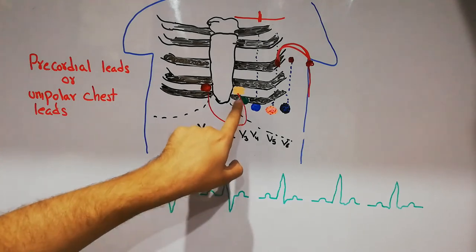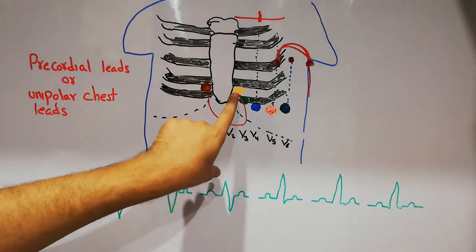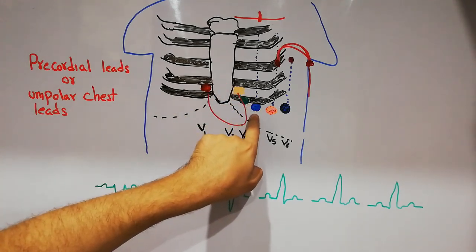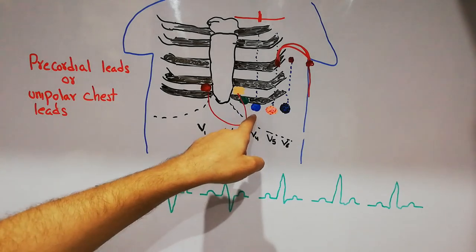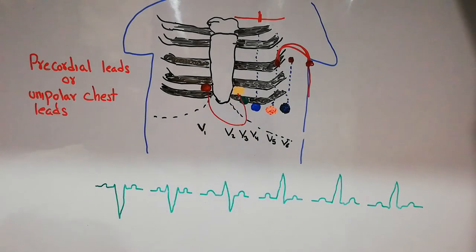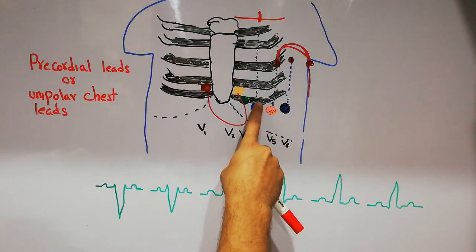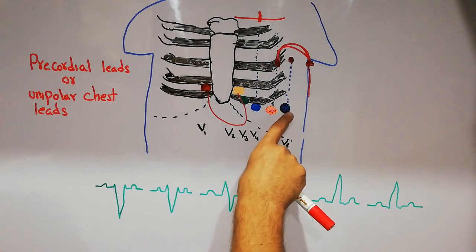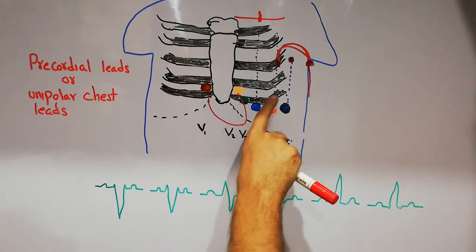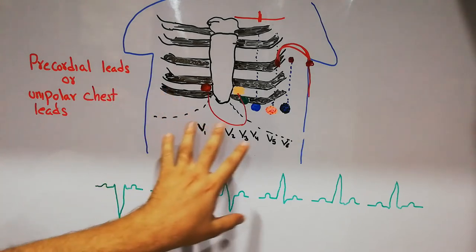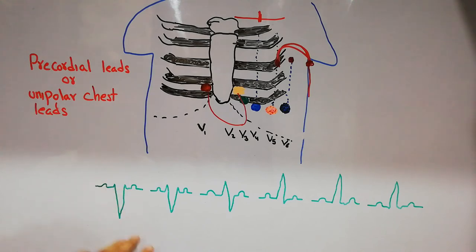V2 is present in the fourth intercostal space on the left side of the sternum. V4 is present in the fifth intercostal space on the mid-clavicular line. V3 is present between V2 and V4. V5 is present in the fifth intercostal space on the anterior axillary line. The recordings from the first two chest leads show negative deflection.